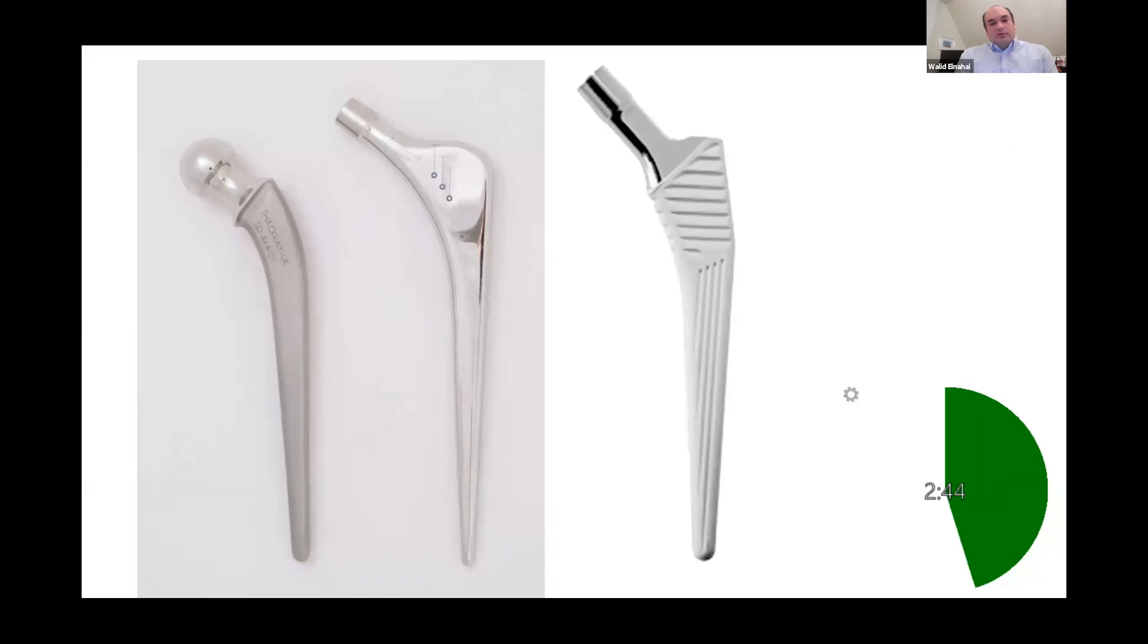This stem relies on controlled subsidence that occurs within the cement mantle. This allows the axial compression forces that occur on the stem to be converted into hoop stresses to the bone.